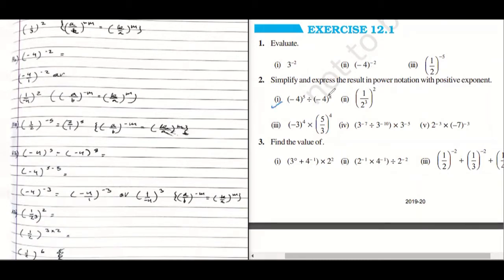Minus four to the power five divided by minus four to the power eight. We have done these laws in class seventh also. Can you tell me which law you are using? The law is: a to the power of m upon a to the power of n equals to a to the power of m minus n. Very good.